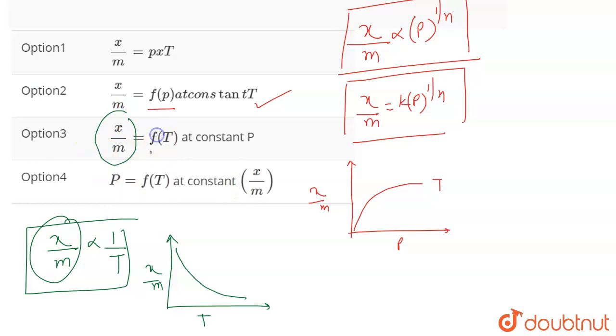Therefore, X/M is also a function of temperature at constant pressure. Yes, by keeping the pressure constant, we plot a curve between X/M and T, which is an inverse type of graph. So this is also correct.